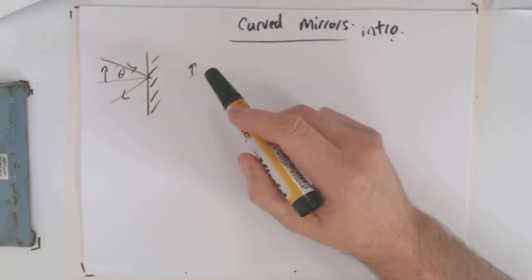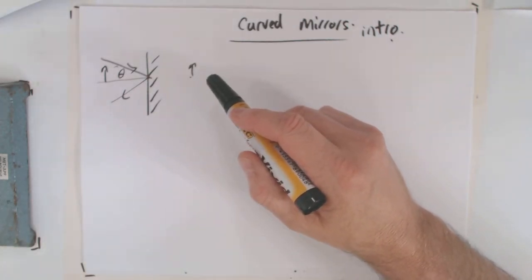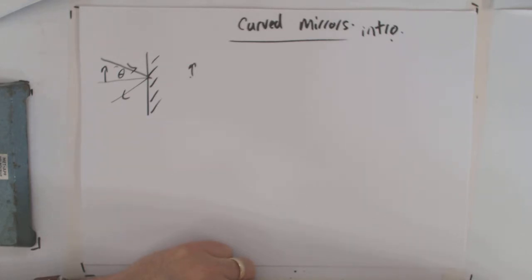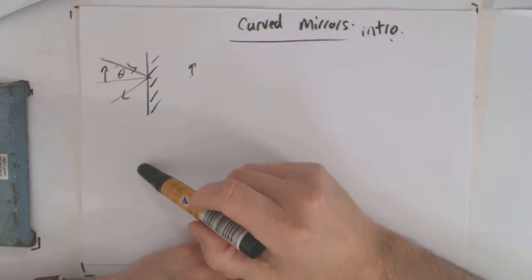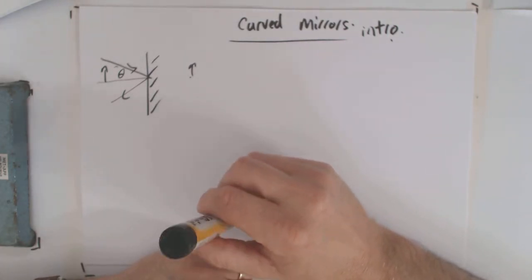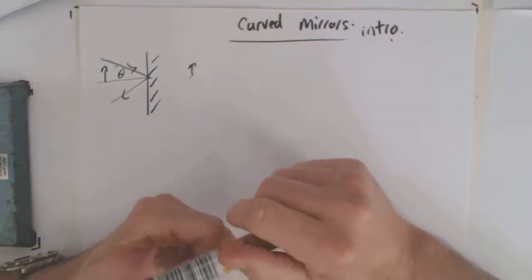Virtual and real are quite difficult things, because an image is an image. Just because the image is virtual doesn't mean that it looks any different. The main criterion that we use is the fact that the rays for a real image are really where the image appears to be, and thus you can project it onto a screen. Hopefully your teacher will demonstrate all this.